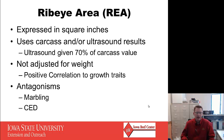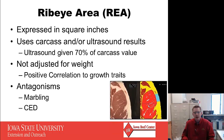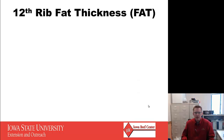Ribeye area also has an antagonism to calving ease direct. An expansive ribeye area indicates a big-topped individual with a lot of base width, and with that comes perhaps some shoulder width and larger size at birth, so there can be some problems from that aspect. This is also how we derive some of our data with online grading capabilities — the lower right picture depicts how we assess ribeye area with an online camera. The blue portion is where the fat thickness would be measured, and that's where we'll go next.